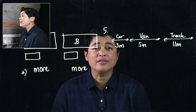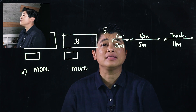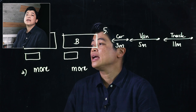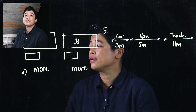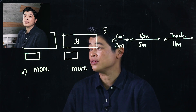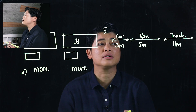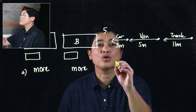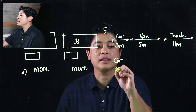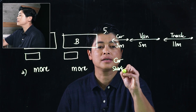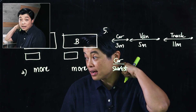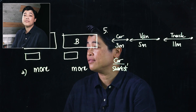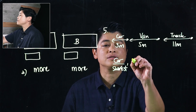The problem says: arrange the vehicles from shortest to longest. We need to train our kids not to be dependent on the pictures, but to recognize from the values given. There's a 3-meter, a 5-meter, and an 11-meter. The shortest is the car — they ask for the vehicle, not just the length.